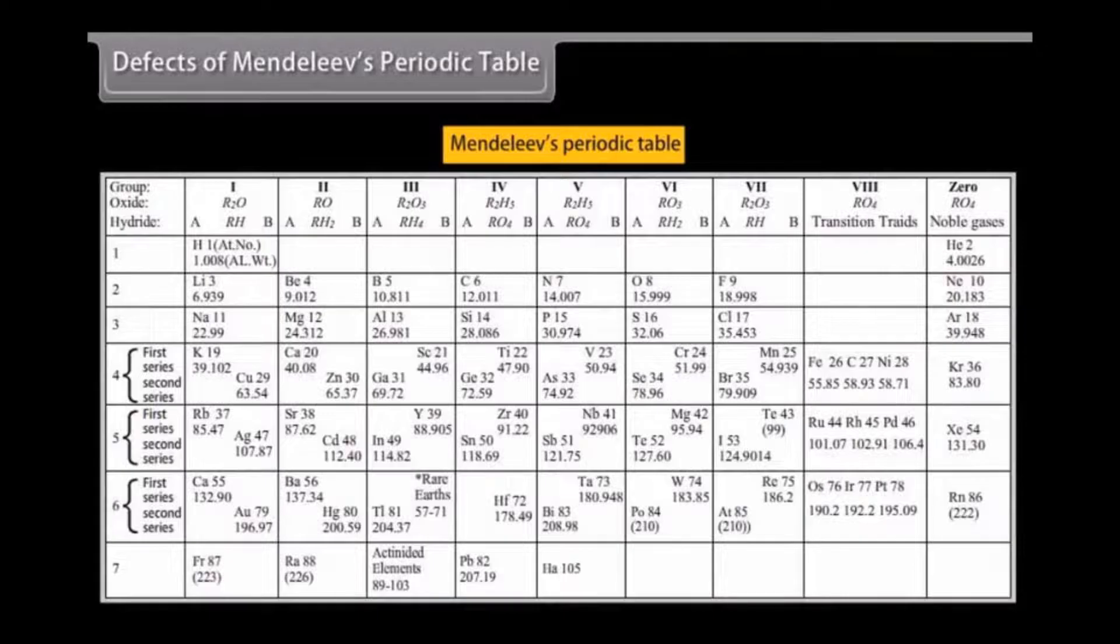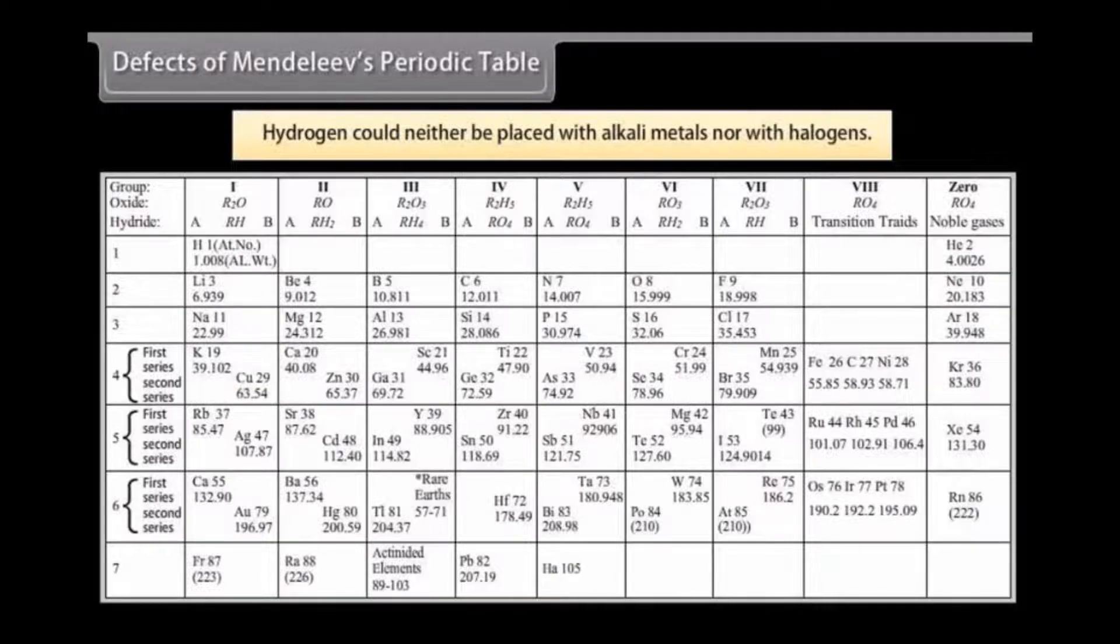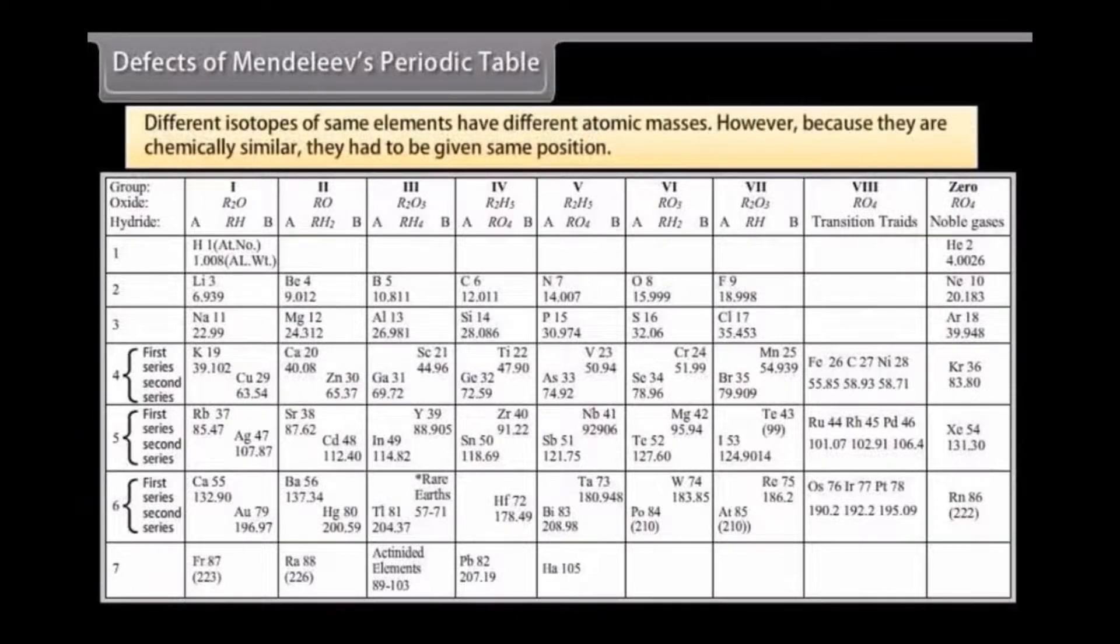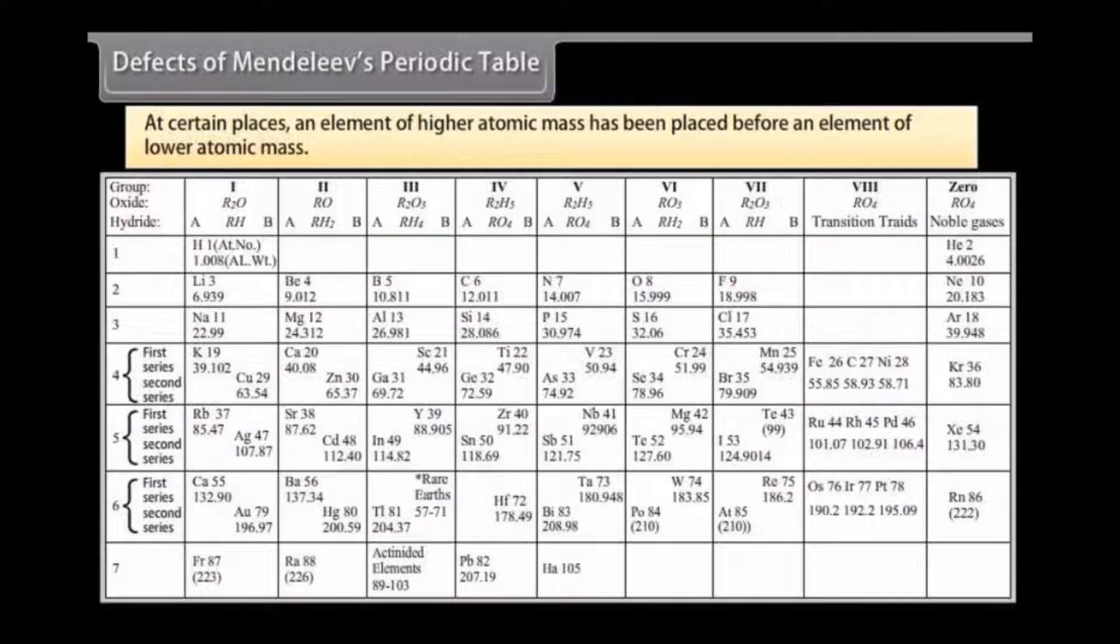Defects of Mendeleev's periodic table. Mendeleev's periodic table had certain defects. They are listed below. Hydrogen could neither be placed with alkali metals nor with halogens as hydrogen resembles alkali metals as well as halogens. Different isotopes of same elements have different atomic masses. This needs to be taken into consideration and each one of them should be given a different position in the periodic table. However, because they are chemically similar, they had to be given same position. At certain places, an element of higher atomic mass has been placed before an element of lower atomic mass. For example, argon 39.91 is placed before potassium 39.1.